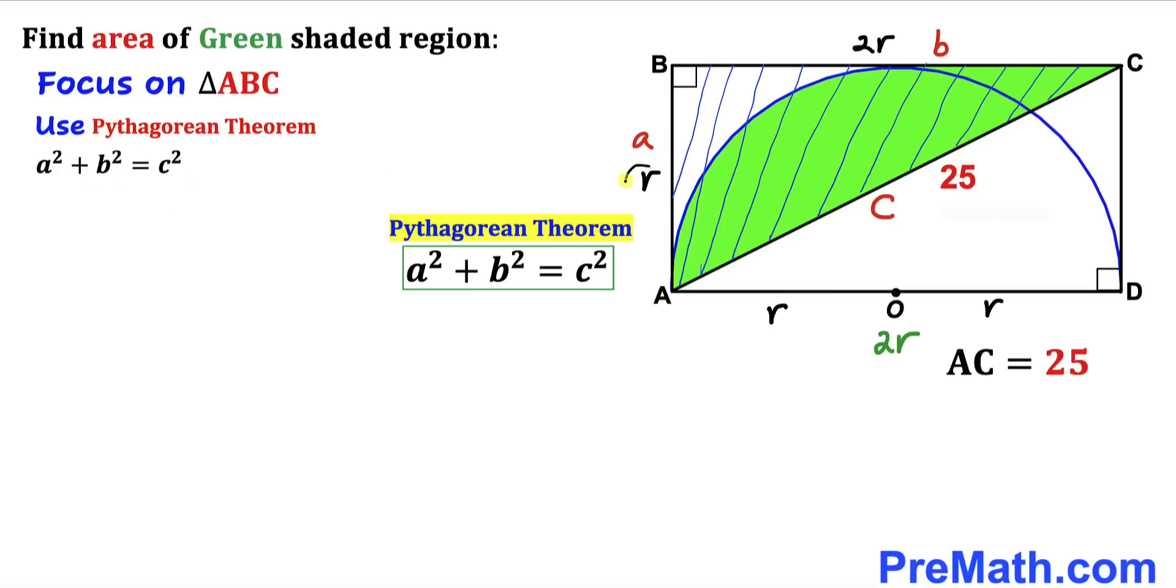A in our case is R. B is 2R and C is 25. So this is going to become simply R² + (2R)² = 25².